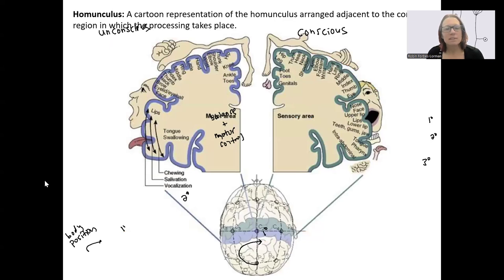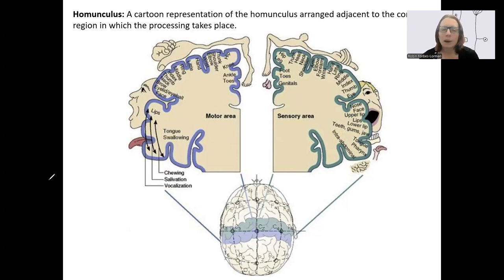When we get to the primary cortex, there's also areas devoted to certain regions of the body. This is a cartoon representation of that. The blue is motor, the green is sensory, that's our precentral gyrus. Across here, different regions of the cortex are devoted to different parts of the body. If you were to stimulate a certain part of the body, a certain part of the brain would respond.